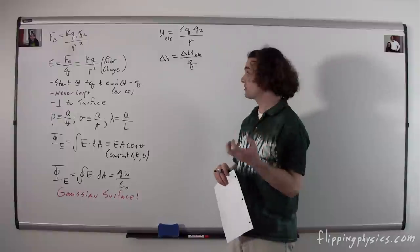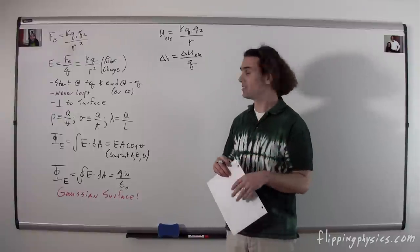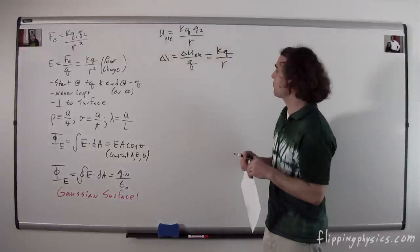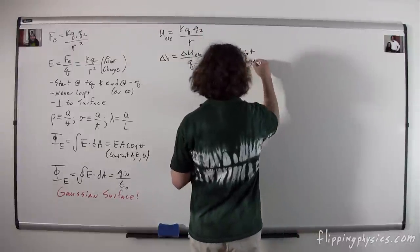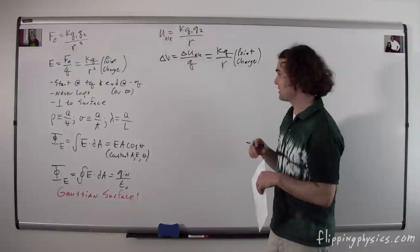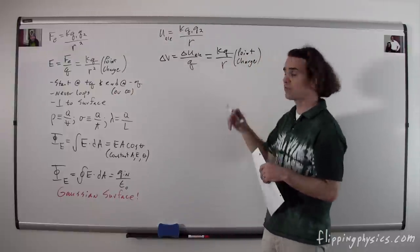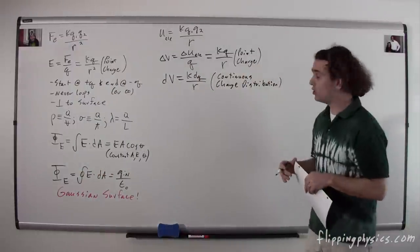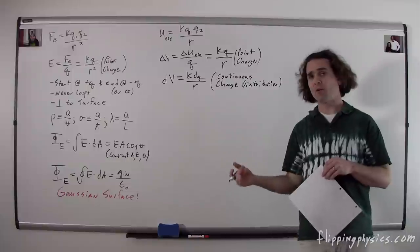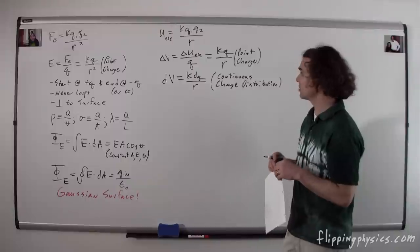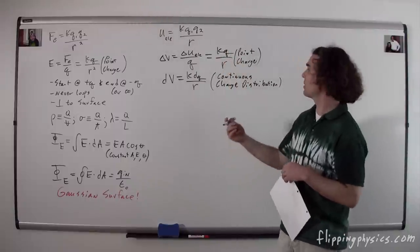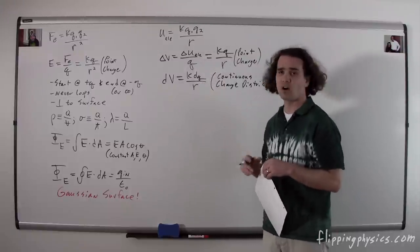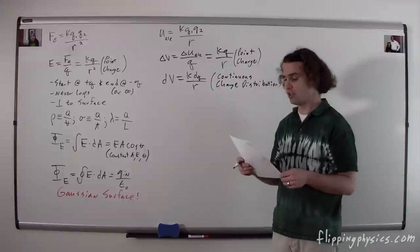The electric potential difference caused by a point charge — all we do is substitute in the equation for the electric potential energy, and we end up with V = kq/r. That is the electric potential difference between a point infinitely far away and a point r distance from our point charge. For a continuous charge distribution, we break it up into little pieces dq, each with dV = kdq/r, and take the integral.